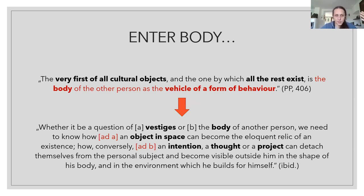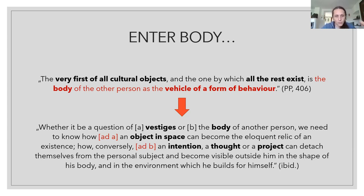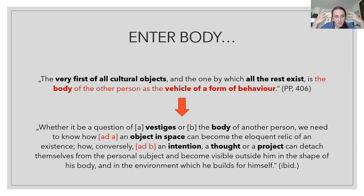This is where the body enters the picture. The very first of all cultural objects, and the one by which all the rest exists, is the body of the other person as the vehicle of a form of behavior. I see a mug, recognize it as a cultural object with a specific affordance. But I can take this one step back: I can see the mug being used by another person, and it is that specific pattern of behavior exhibited by the body of the other that invests the object with meaning.